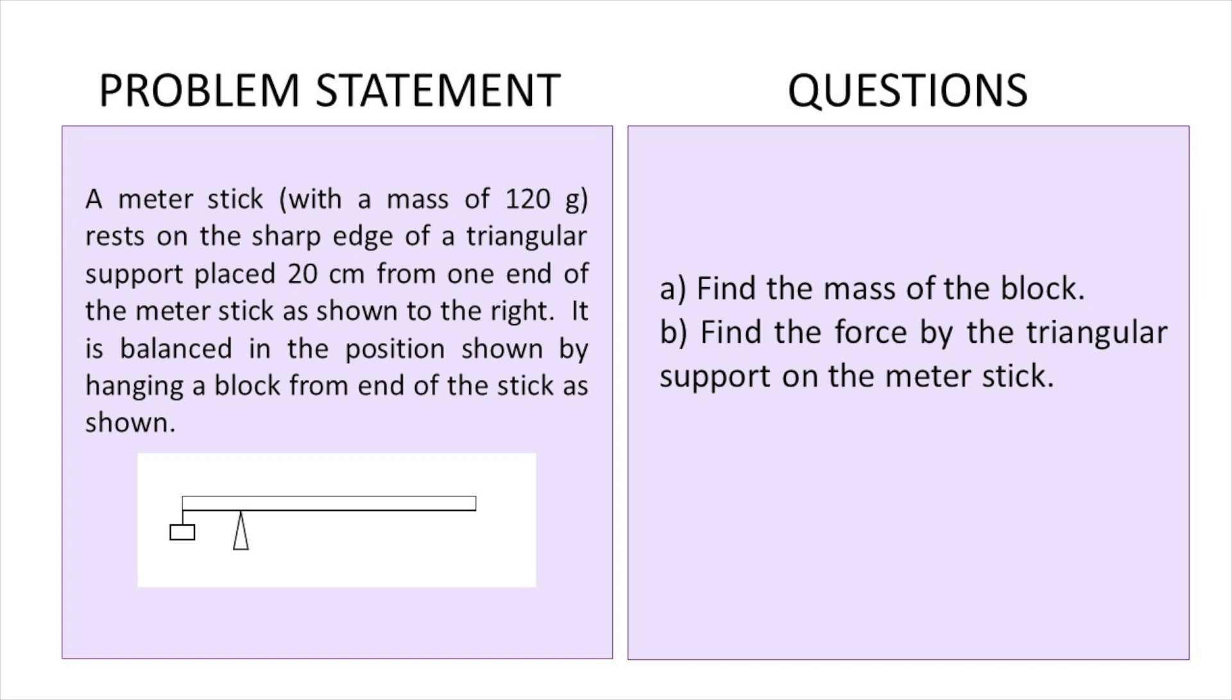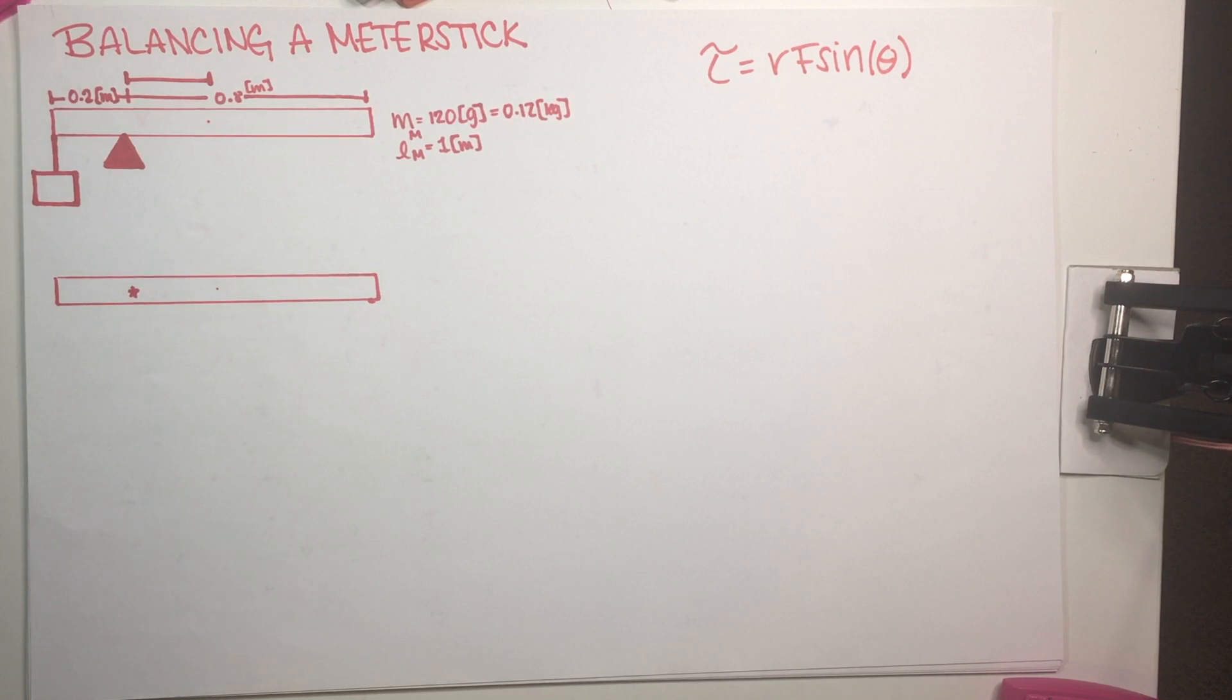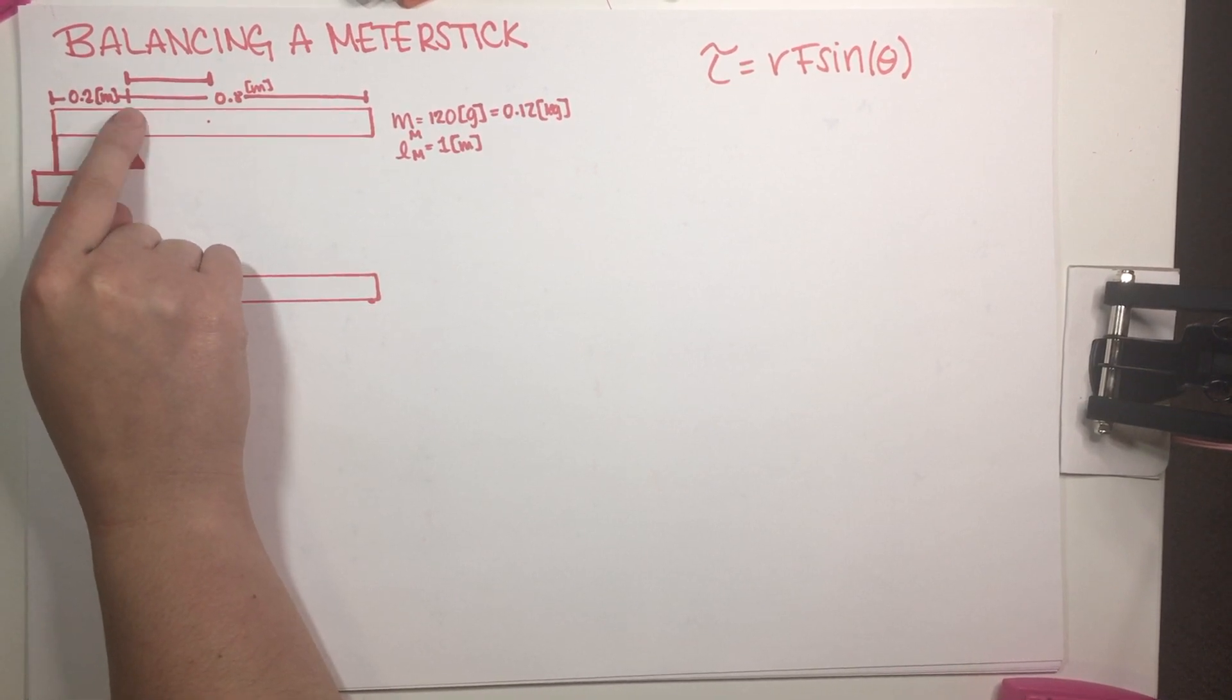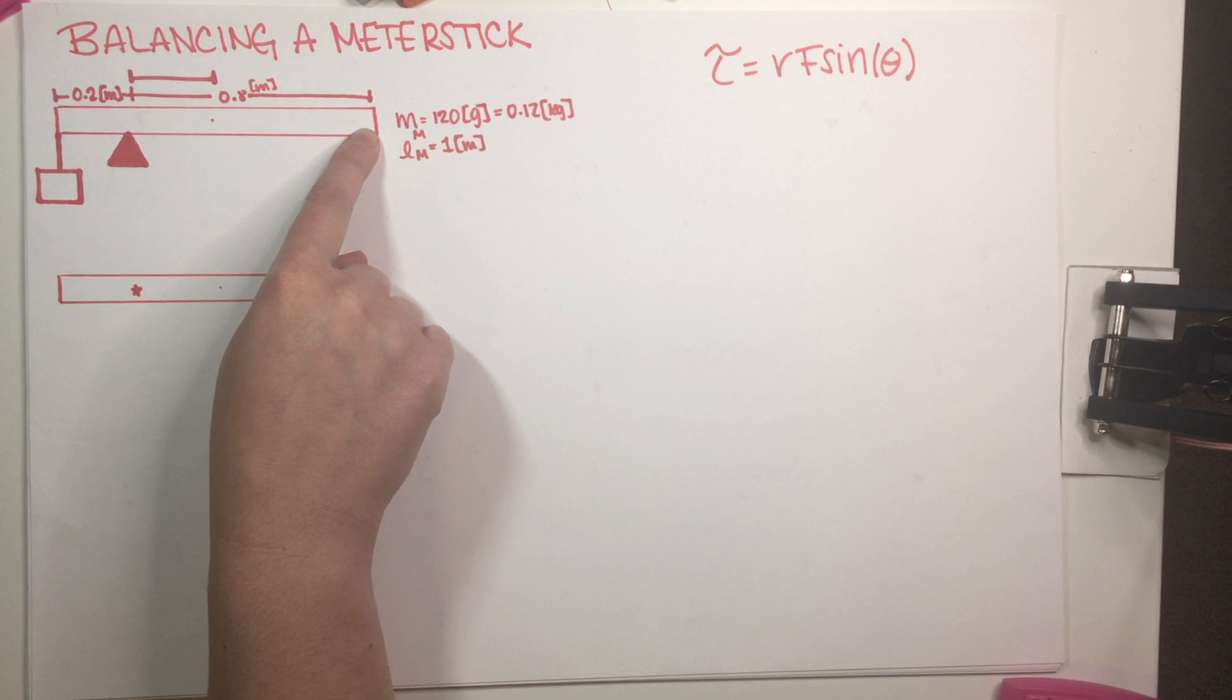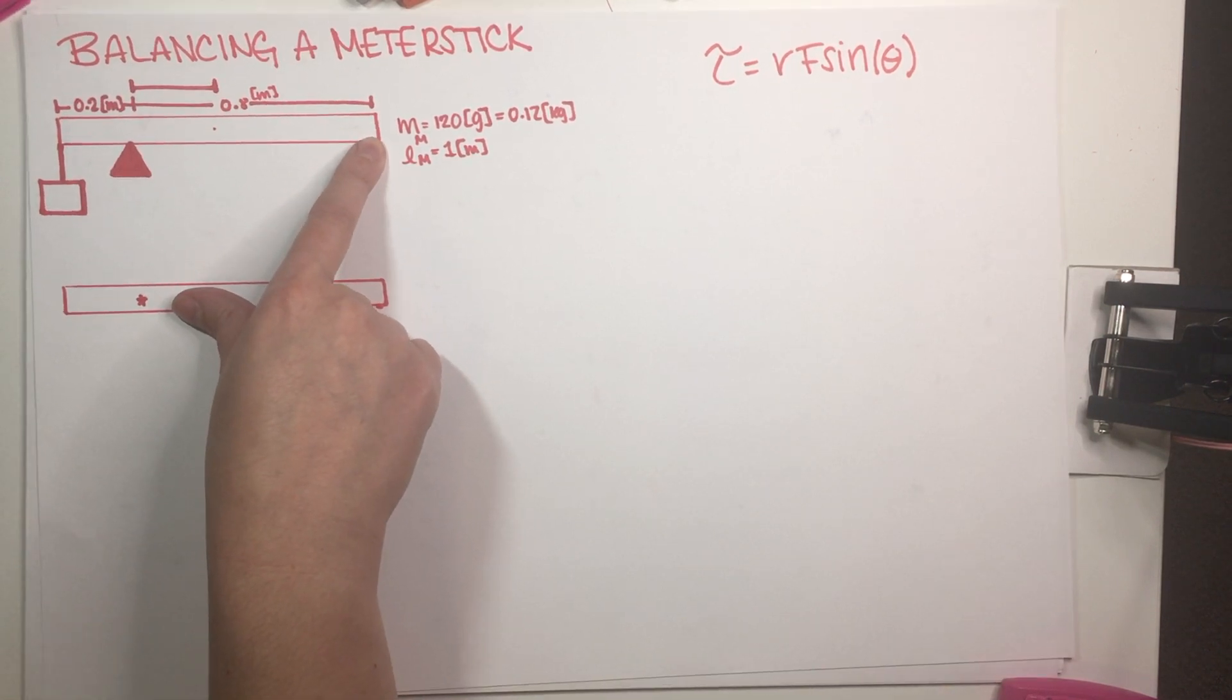As you can see I've written down all of the relevant information here on my notes. So basically we have 0.2 meters, I changed everything into meters. And also, even though the problem does not explicitly say this, they do say that this is a meter stick.